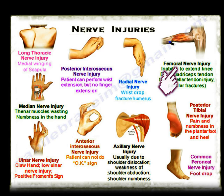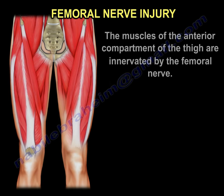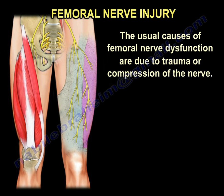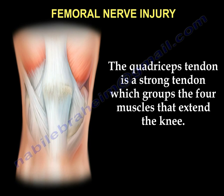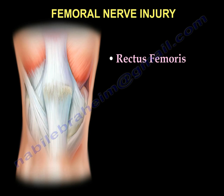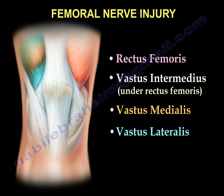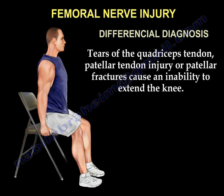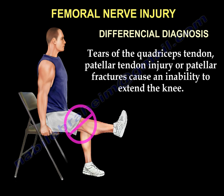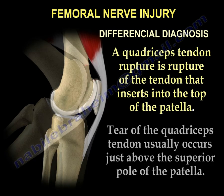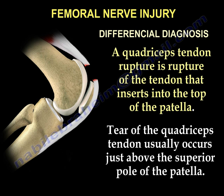Femoral Nerve Injury. The muscles of the anterior compartment of the thigh are innervated by the femoral nerve. The usual causes of femoral nerve dysfunction are due to trauma and compression of the nerve. The quadriceps tendon is a strong tendon which groups the four muscles that extend the knee. These muscles include the rectus femoris, vastus intermedius, vastus medialis, and the vastus lateralis. Tears of the quadriceps tendon, patellar tendon injury, or patellar fractures cause an inability to extend the knee. A quadriceps tendon rupture is rupture of the tendon that inserts into the top of the patella, and usually occurs just above the superior pole of the patella.